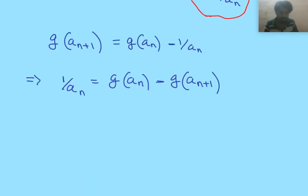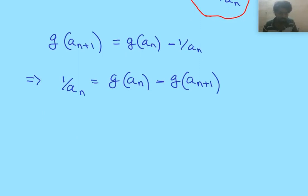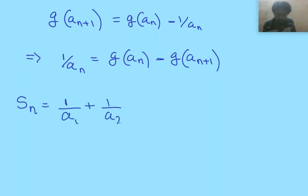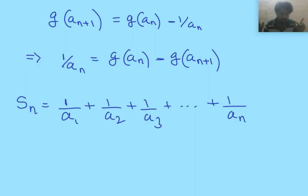Now you can guess what we are approaching — we are trying to do telescoping the series. We have the nth term of the reciprocal series as g(a_n) minus g(a_{n+1}). Now let us consider the sum of first n elements of those reciprocals. S_n equals 1/a_1 plus 1/a_2 plus 1/a_3 and so on till 1/a_n. We are going to find the limit of S_n as n tends to infinity to get the infinite sum result.